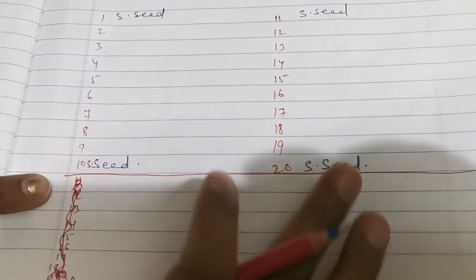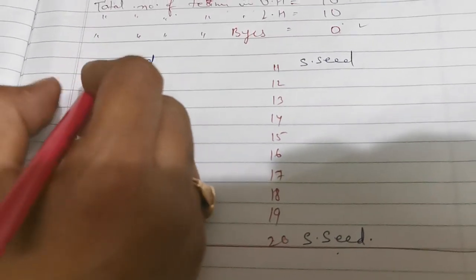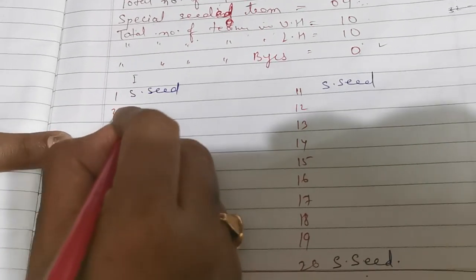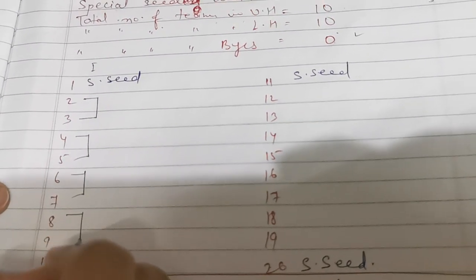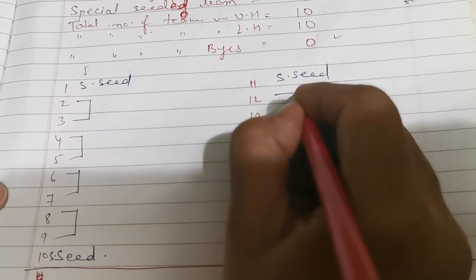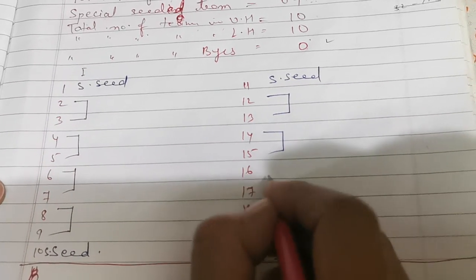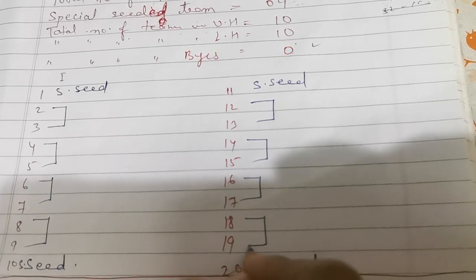Now we will put the teams. The first one will start: 2, 3, 4, and 5, 6, and 7, 8, 10, 9, 12, and 13, 14, and 15, 16, 17, 18, 19.